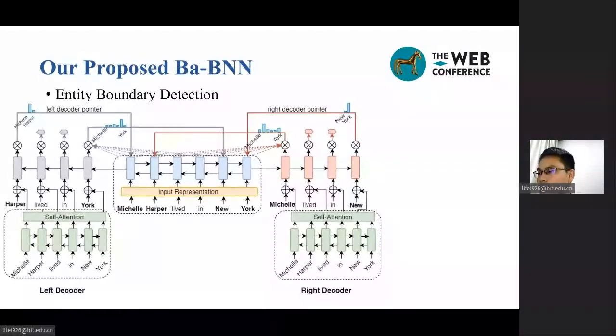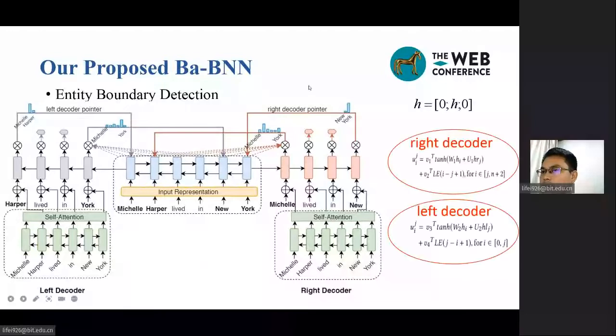We have adopted the pointer mechanism to sequentially detect the boundaries. Specifically, we first pad the hidden states at each of the input encoder with two essential vectors at the first and the last positions. Then, two LSTMs are employed as the right decoder and the left decoder to output the decoder hidden states HR and HL respectively. To obtain global boundary features, we use a boundary classifier on H to predict whether the current word is a boundary or not.